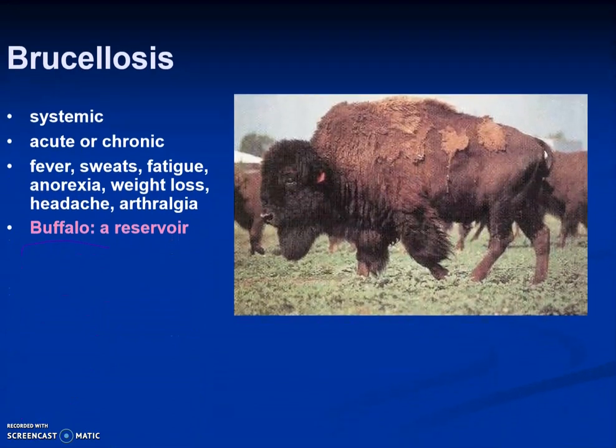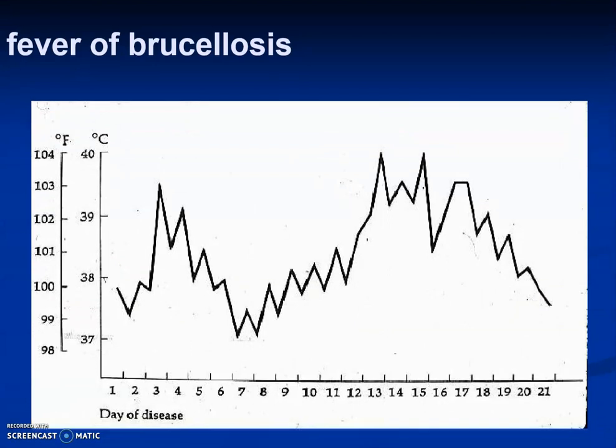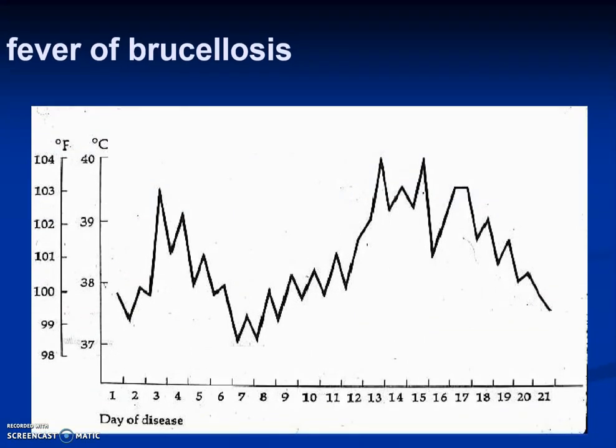The buffalo is a reservoir for brucellosis. It can be acute or chronic, and it's a systemic disease. Symptoms include fever, sweats, fatigue, anorexia, weight loss, headache, and arthralgia — joint pain. The fever of brucellosis is called an undulating fever because it goes up and down repeatedly.